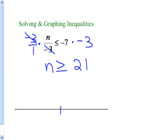My boundary for my graph here then is 21. n is greater than or equal to 21. So I am going to fill in my circle here because n could be 21. And I think to myself what numbers are bigger than 21, 22, 23, 30, 50, all the numbers to the right of 21 are bigger than 21.